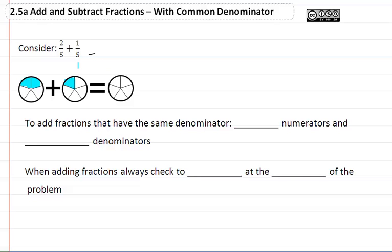Consider 2 fifths plus 1 fifth. Here in my picture representation, I have 2 fifths and I have 1 fifth. And if I add them together,